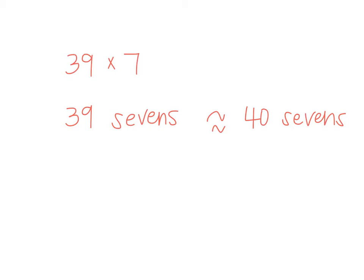So why might it be good to think about this as 40 sevens compared to 39 sevens? Go ahead and talk at your table groups. We now know 40 sevens is the same thing as 40 times 7, right? And isn't that a lot easier than thinking about 39 times 7? Because 40 times 7, we could just think, what's 4 times 7? 28.